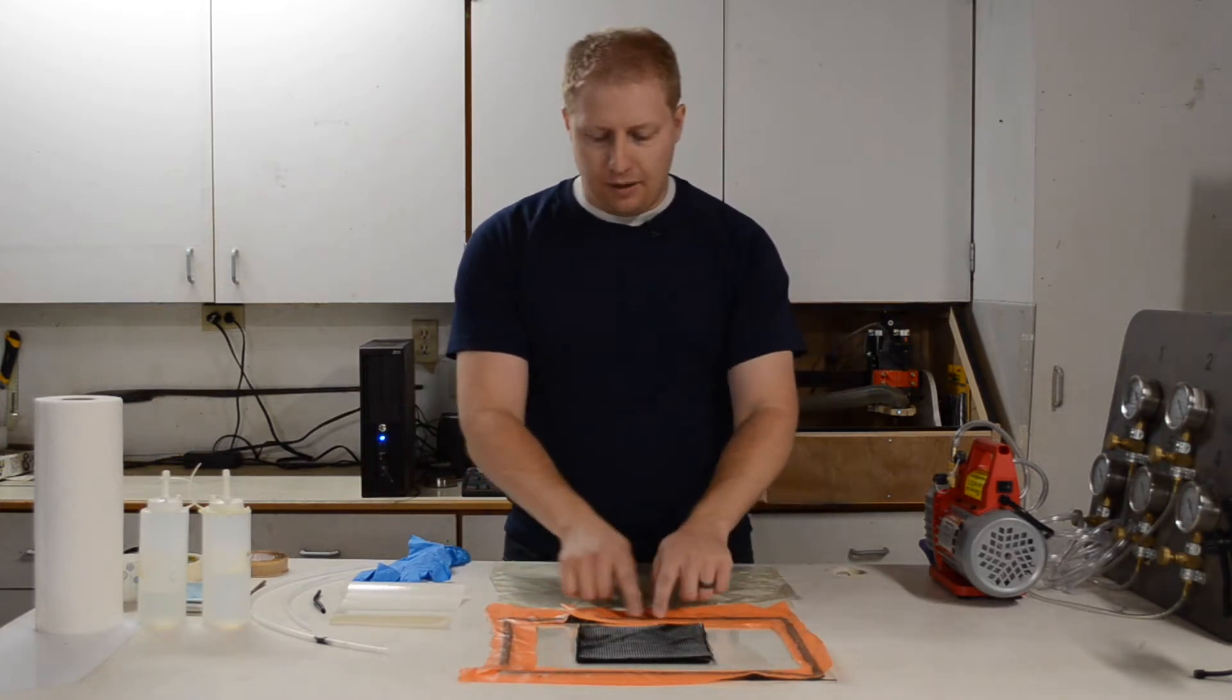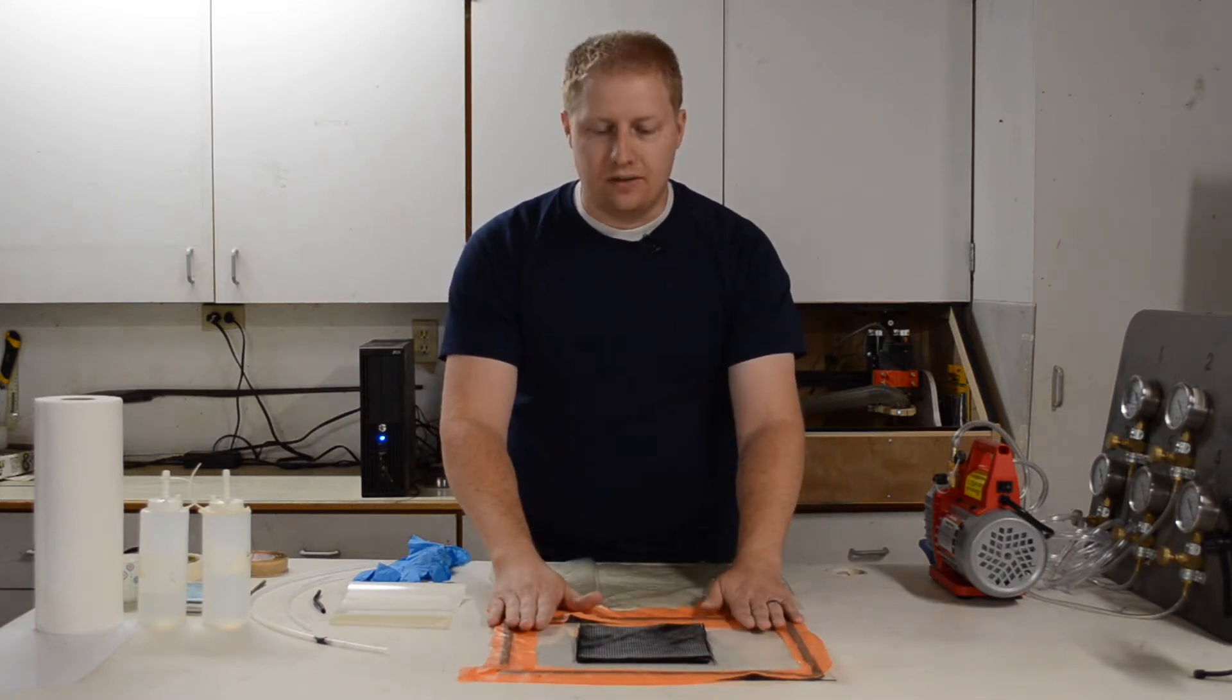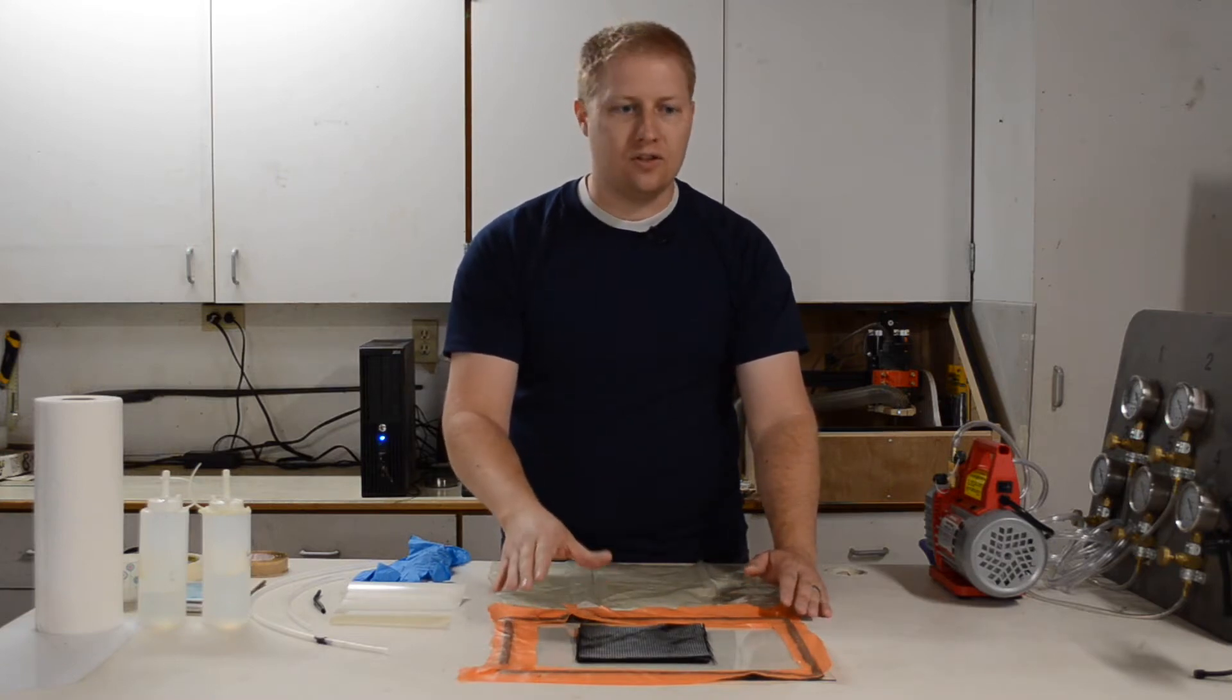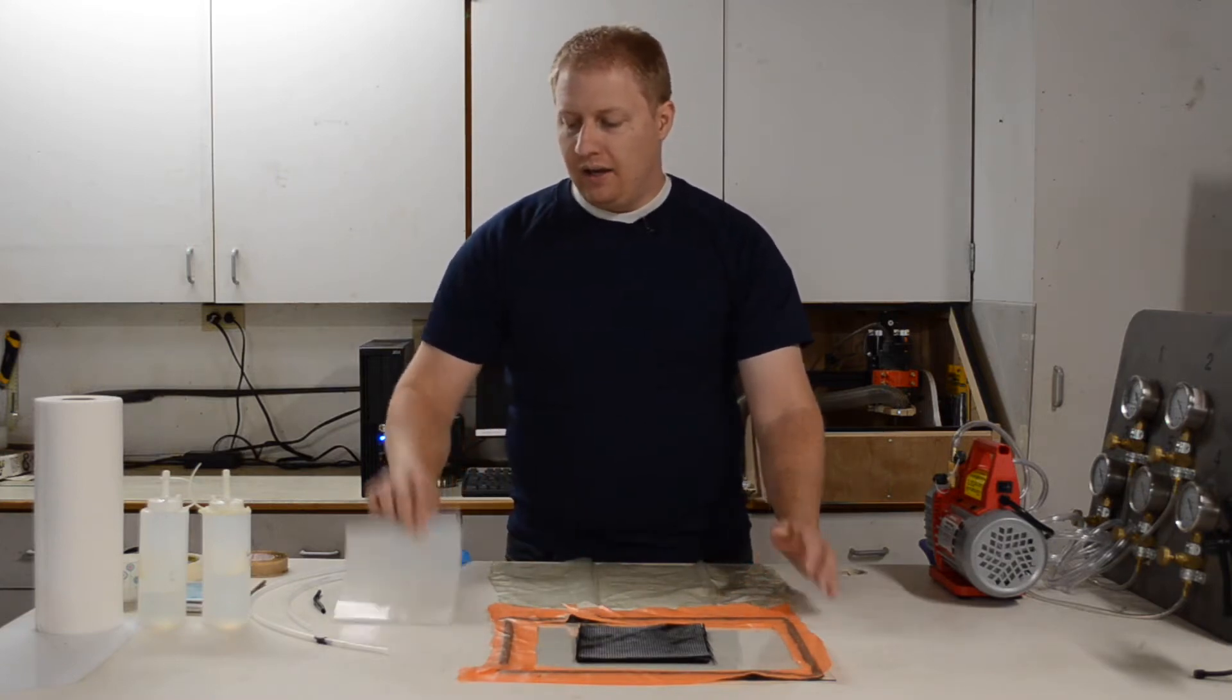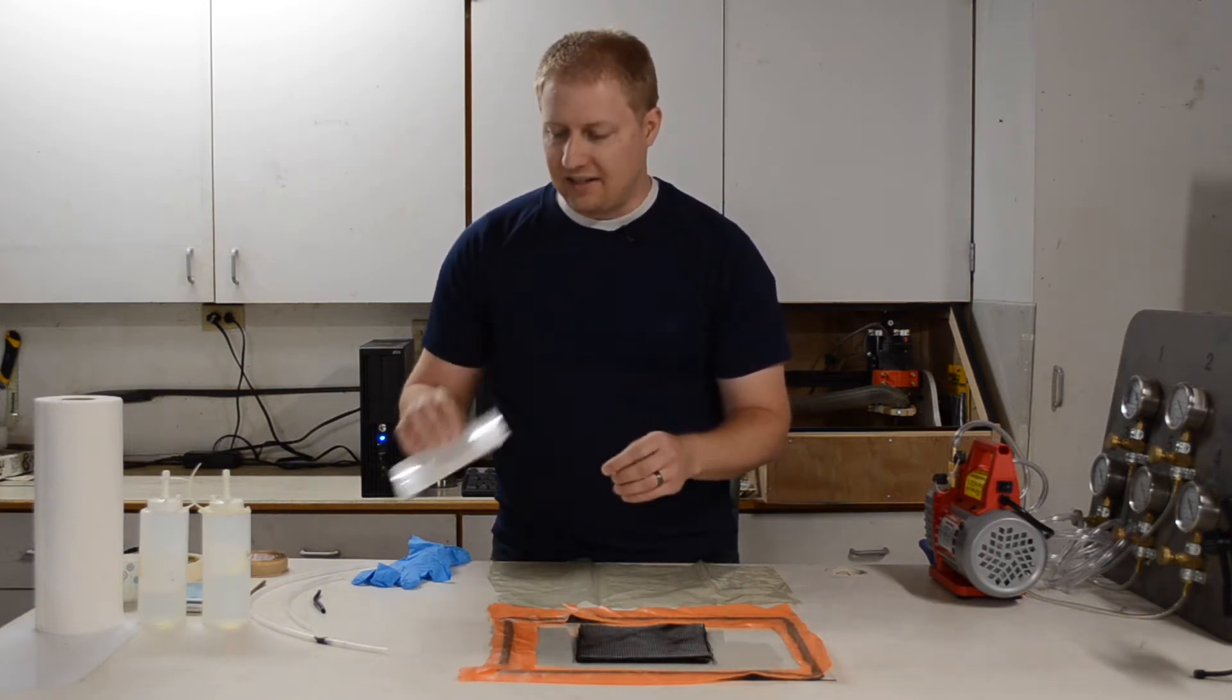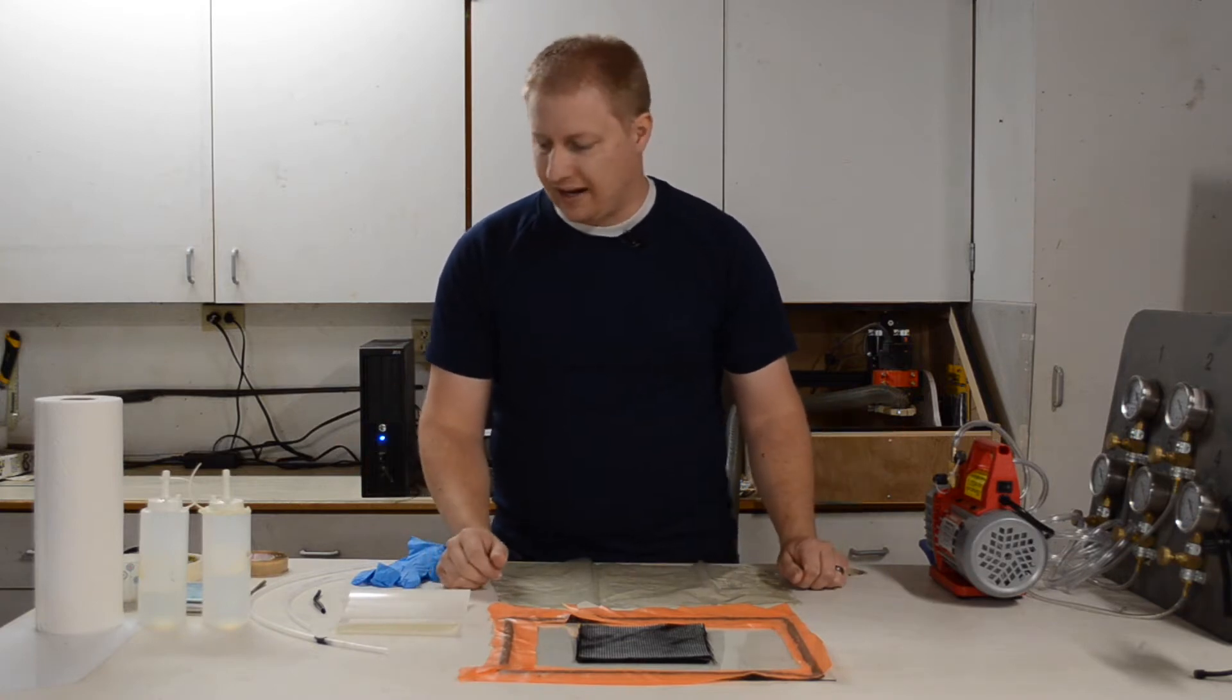Carbon's in place. I've got my bag sealant tape all the way around. This is just a standard piece of glass, just normal glass. I went ahead and waxed it with two coats of Partall No. 2. 14 mil Mylar, same stuff I used last time. Again, two coats of Partall No. 2 Mold Release Wax.